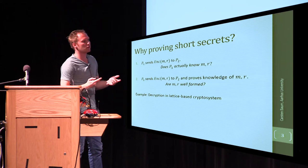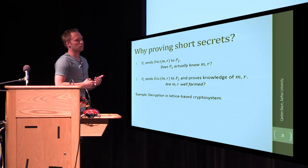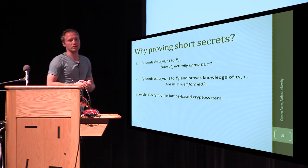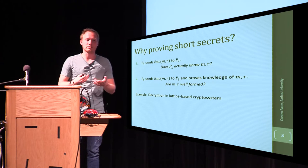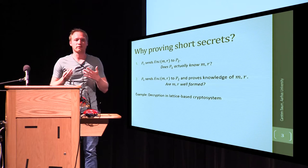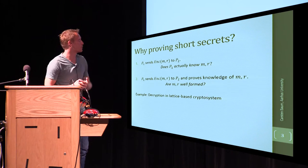Then, for special encryption schemes, we may have to prove an additional thing, which is not just that we know a plaintext and that we know some randomness, but that both of them fulfill certain criteria of shortness.